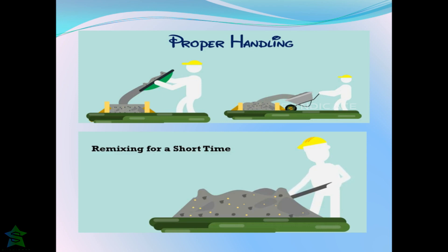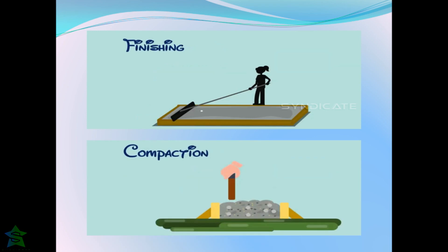At any stage, if segregation is observed, remixing for a short time would make concrete homogeneous again. While finishing concrete floors or pavements to obtain a smooth surface, masons work too much with trowels immediately on placing concrete, which presses the coarse aggregates down, resulting in the movement of excess paste to the top surface. Hence, a time interval must be followed before finishing concrete.